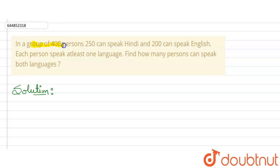In a group of 400 persons, 250 can speak Hindi, 200 can speak English. Each person speaks at least one language. Find how many persons can speak both languages. So let's write the given data here.